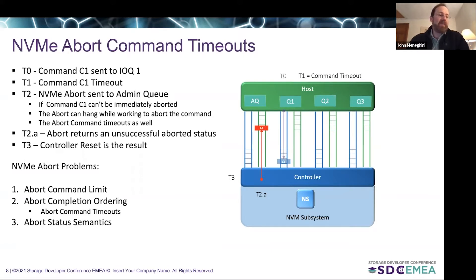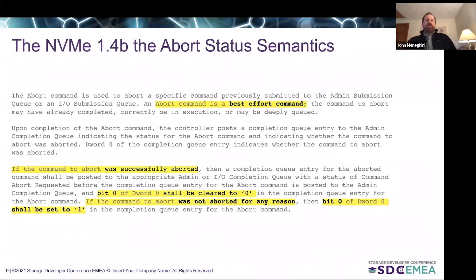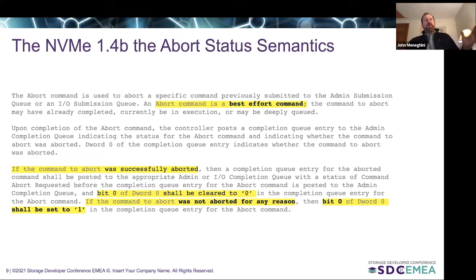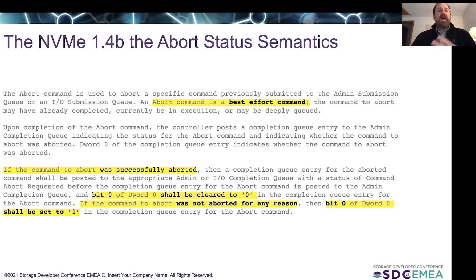This brings me to the next topic, which is what I call the abort status semantics. The abort command itself is defined as a best effort command, and the status that is returned is very simple — it's one bit. If the command is successfully aborted, the abort command returns status with bit one cleared; if it was not aborted for any reason, bit zero is set to one. So there is very little diagnostic information for the host to understand what actually happened. The fact that it's defined as best effort means the controller can do whatever it wants — you may not even get aborted, and this has been a problem.